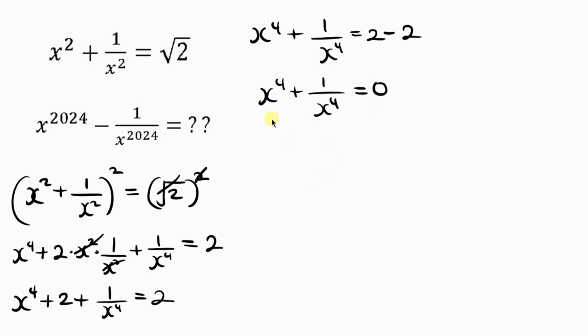Now look at this expression. Our next step will be to remove the fraction. To clear out the fraction we need to use x to power 4 to multiply through. I'll be having x to power 8 plus 1 equal to 0. And now x to power 8 will be equal to, as 1 crosses to the right it becomes negative 1.